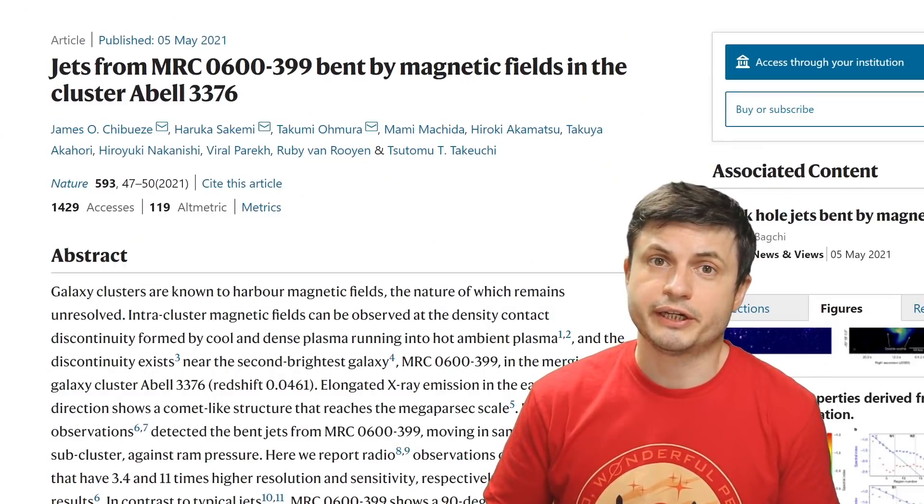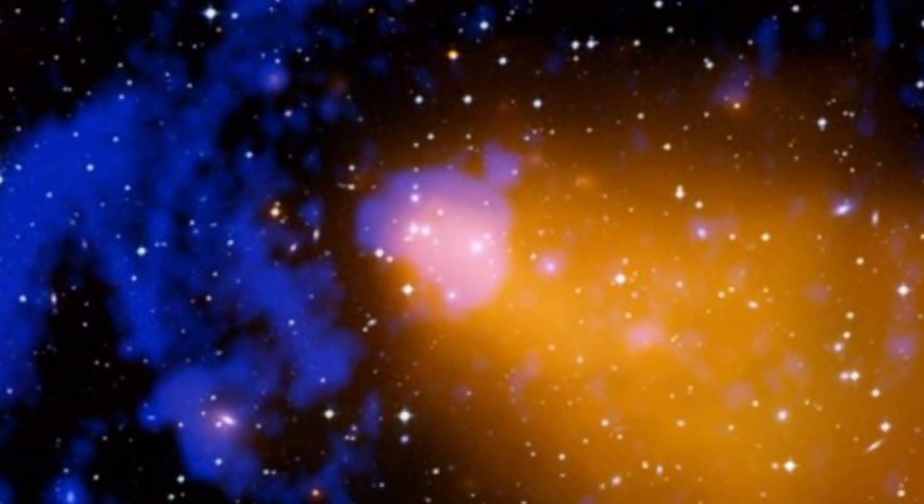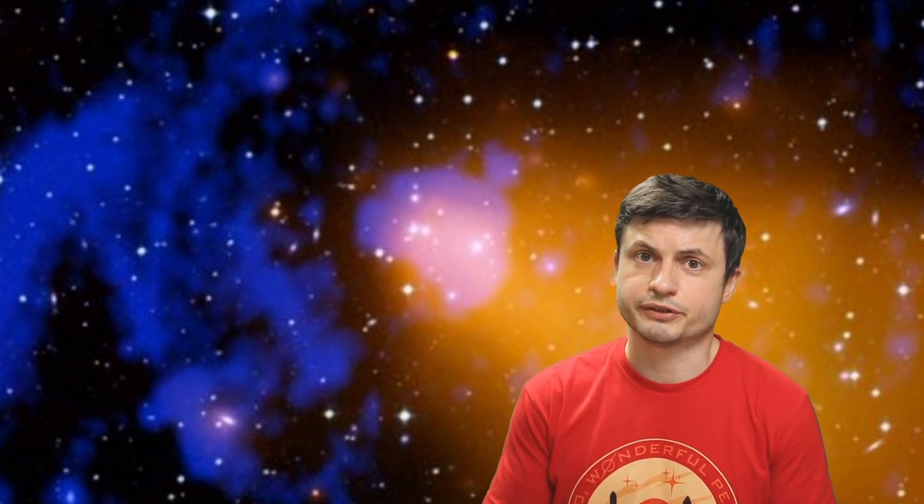But the scientists behind this study decided to investigate the famous cluster known as Abel 3376, located about 600 million light years away from us. That's particularly interesting because in the middle of this cluster, the most powerful and the brightest galaxy with the biggest black hole seems to have this strange astrophysical jet that suddenly turns 90 degrees and goes in a different direction and also seems to do so on both sides.